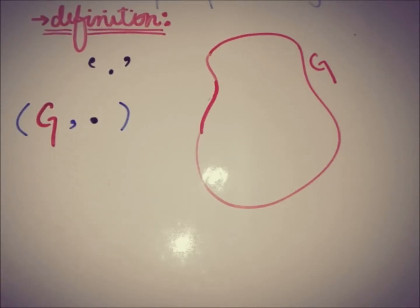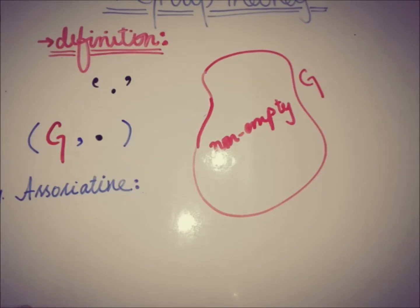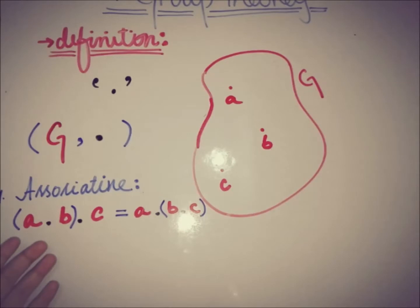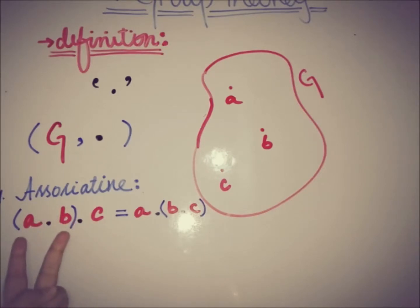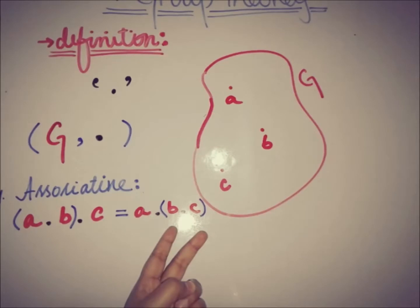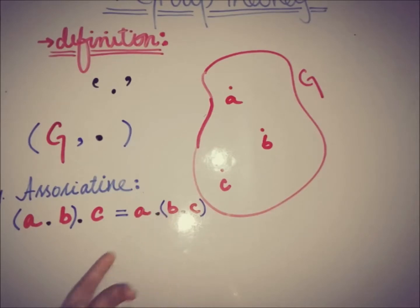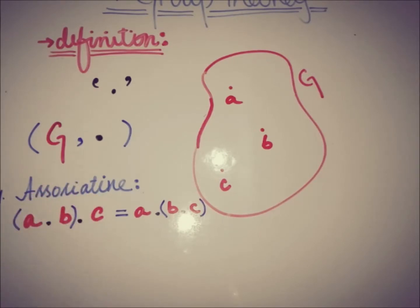The first axiom is that the algebraic operation must be associative. That is, if we take elements a, b, and c from the non-empty group G and apply the operation of multiplication, then (a·b)·c must equal a·(b·c). This is the associative property of the algebraic operation of multiplication, and it must hold for all elements of G.